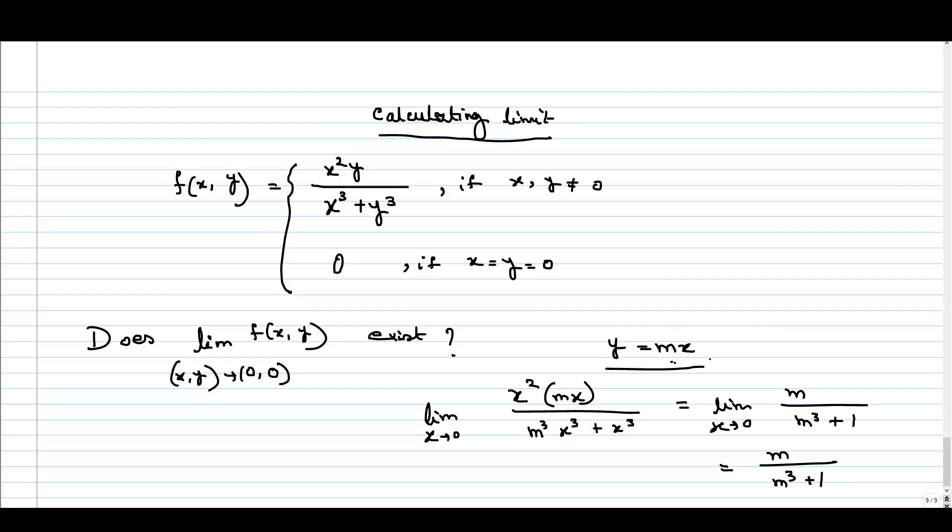So here we can clearly see that when we are approaching the origin from different directions in the x-y plane, approaching from different straight lines, the limiting value will be different. It will depend on m.